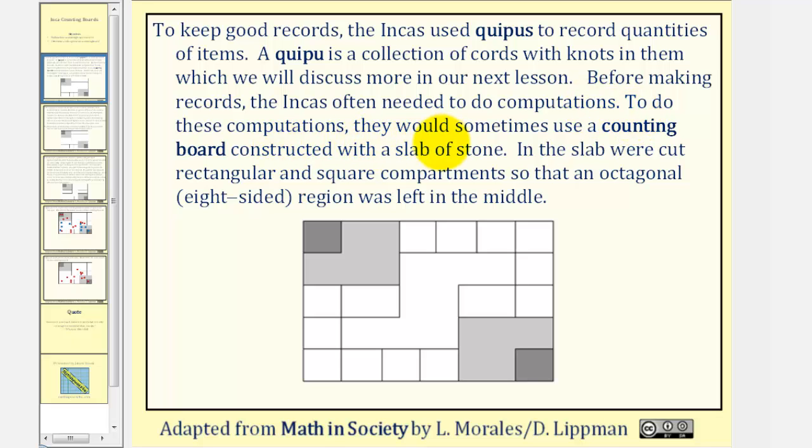To do these computations, they would sometimes use a counting board constructed with a slab of stone. In this slab were cut rectangular and square compartments so that an octagonal or eight-sided region was left in the middle, which would be this region here.